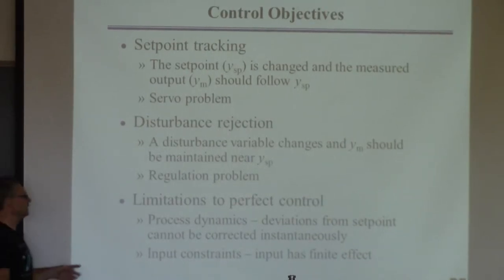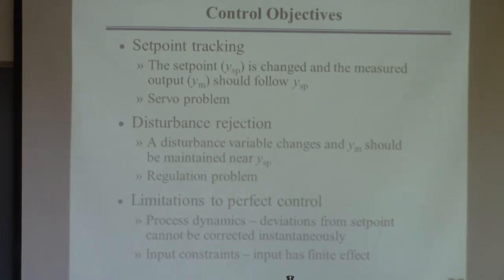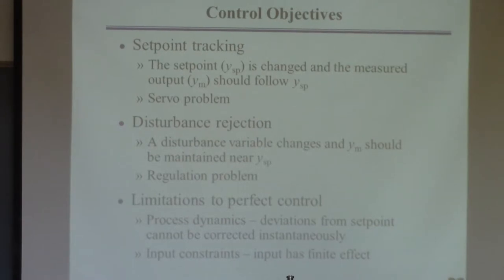There are limits to how well you can do with control. If you want a 25% increase in production, you can't get the production rate there instantaneously, because the plant has so many dynamics associated with it. The dynamics of a distillation column are so slow that going from one operating point to another takes well over an hour. It's a function of the inherent dynamics of the process — you just have to live with that. You can't make a process with a time constant of an hour respond in seconds.